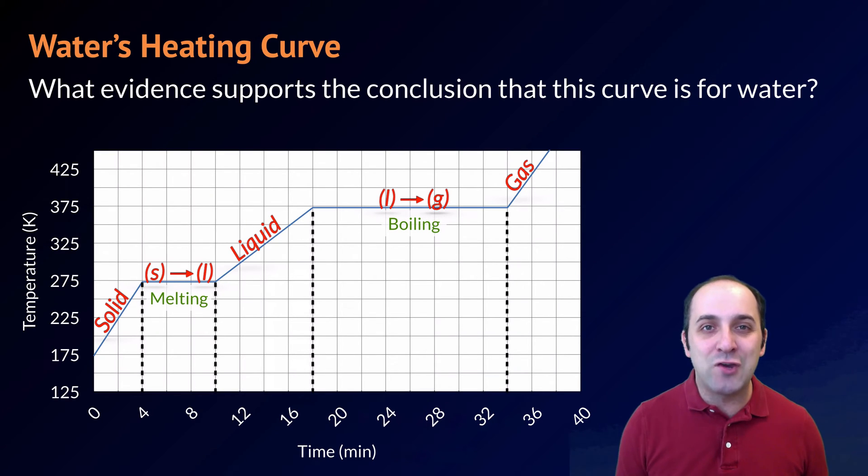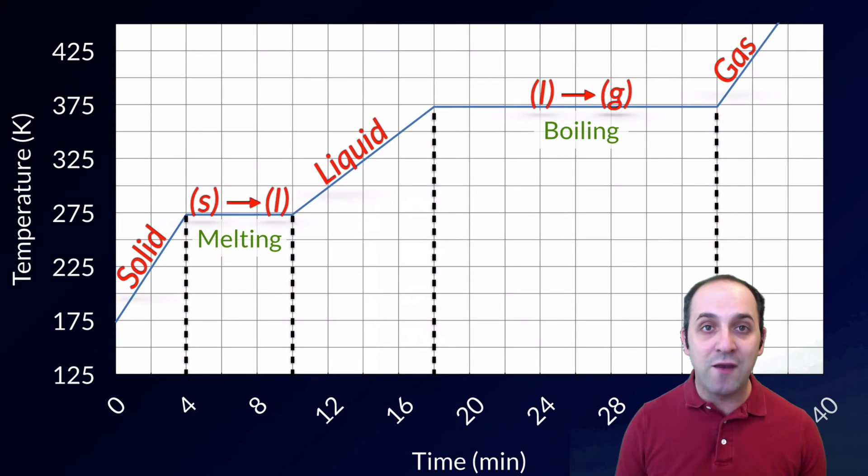So the answer to this question is in the melting point and the boiling point for this particular substance. I'm going to zoom in so that you can see what the melting point and boiling point are of this substance. If you look, you can see that this substance is melting at a temperature of 273 degrees Kelvin, which of course is 0 degrees Celsius, and it's boiling at a temperature of 373 degrees Kelvin, or 100 degrees Celsius. Those are the characteristic melting points and boiling points for water. And so that's all of the evidence we need to really support our conclusion that what we see here on the graph is in fact data from the heating of water.